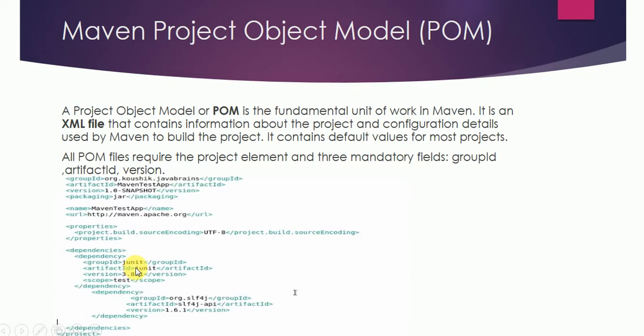Dependencies in the POM file define what packages are needed during the build. For example, if you are building a Java application, the JUnit package may be needed, along with other packages like slf4j-api. These dependencies will be automatically downloaded from the repository at build time. Whatever dependencies are required to build the project will be automatically downloaded from the repository.